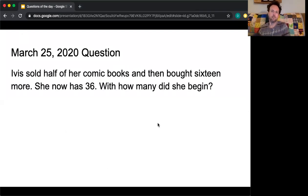So today's question stars the one and only Evie. Evie sold half her comic books and then bought 16 more. She now has 36. With how many did she begin? Now that last sentence sounds weird, but it's actually grammatically correct because you should not end a sentence with a preposition. So Evie sold half her comic books. To start us out,